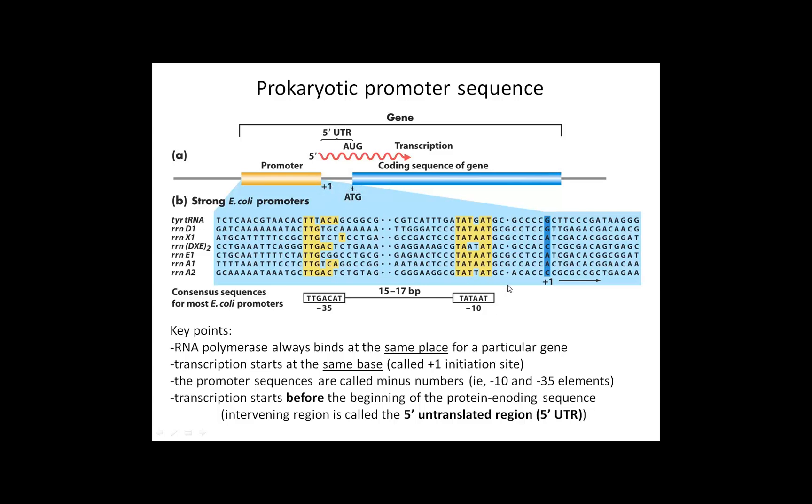If you look at a number of different genes, here's a whole bunch of genes that we've lined up by sequence, all of them with their plus one sequence starting at the same place. If you look in the promoter, which is before that plus one site, you'll find there are certain conserved sequences found in all genes.